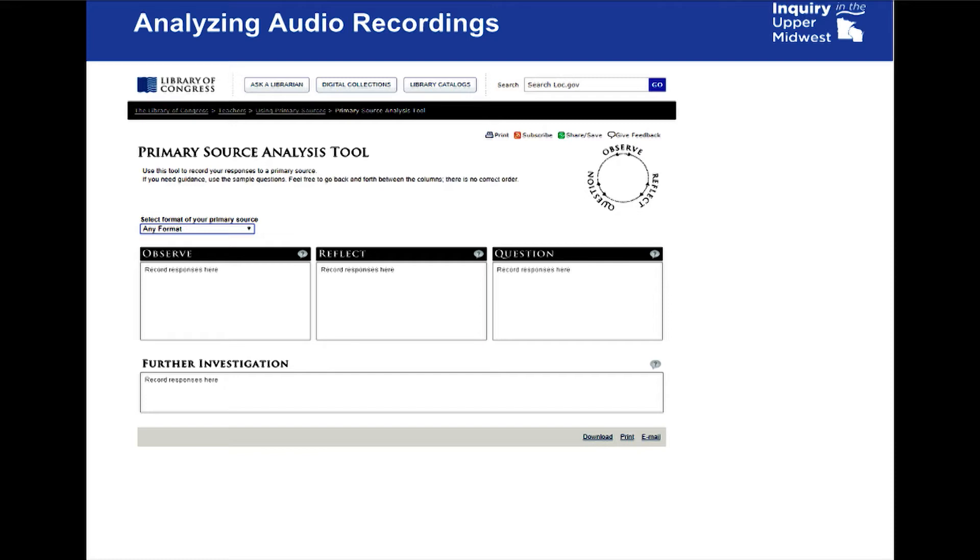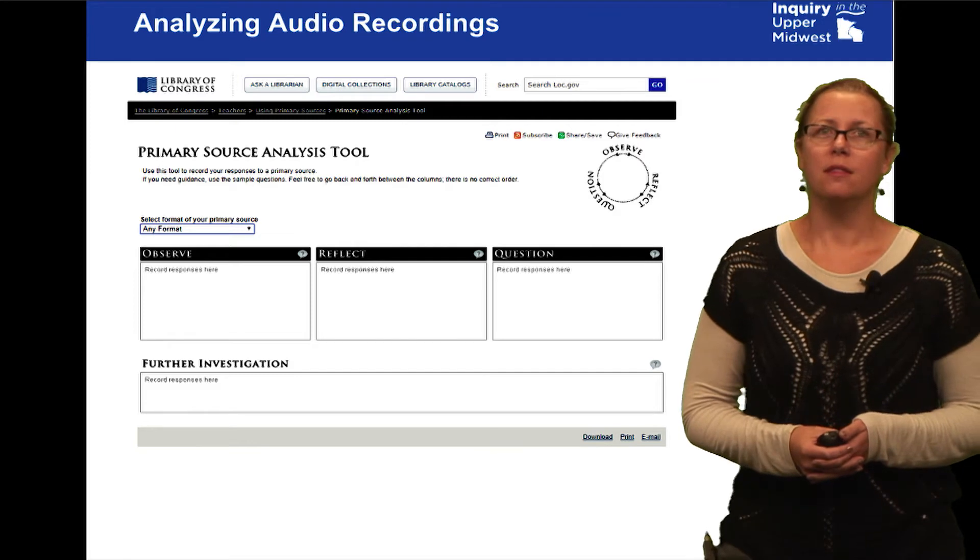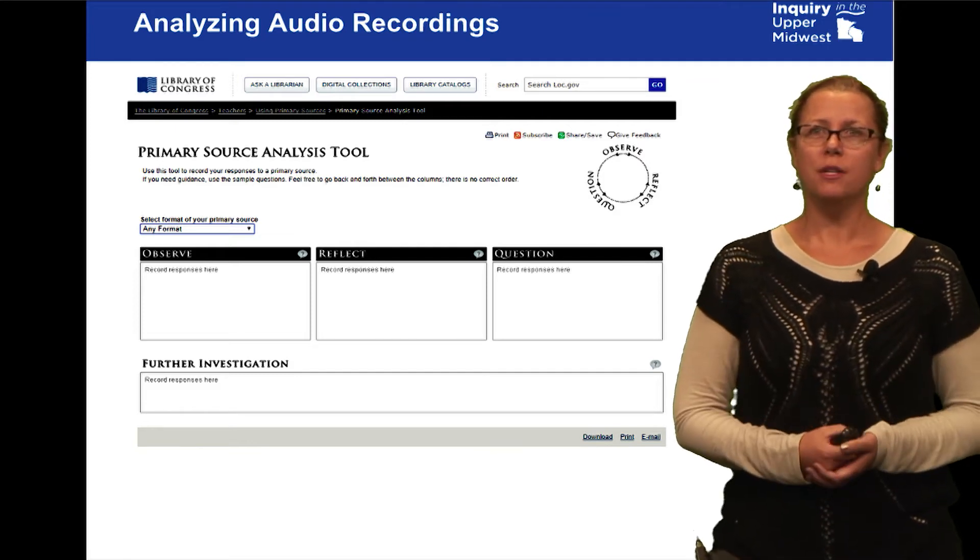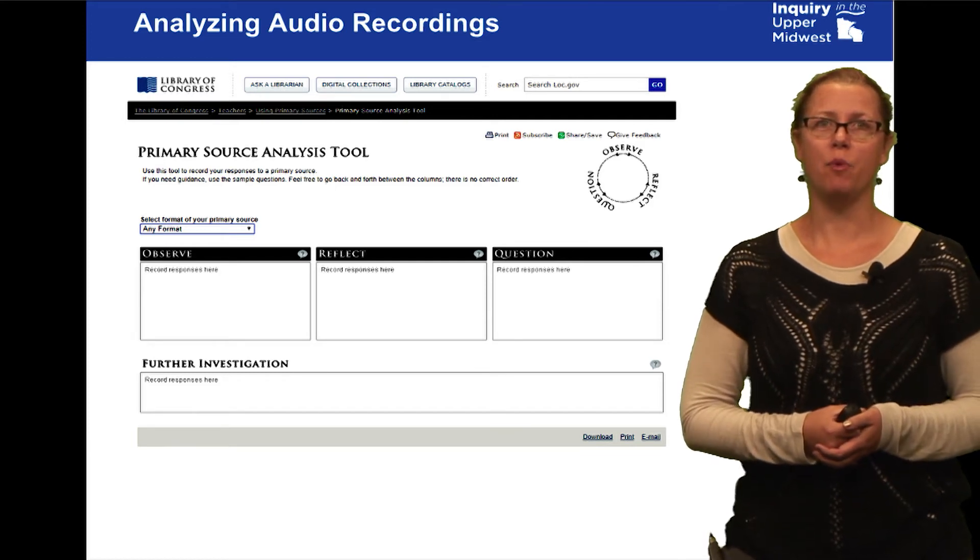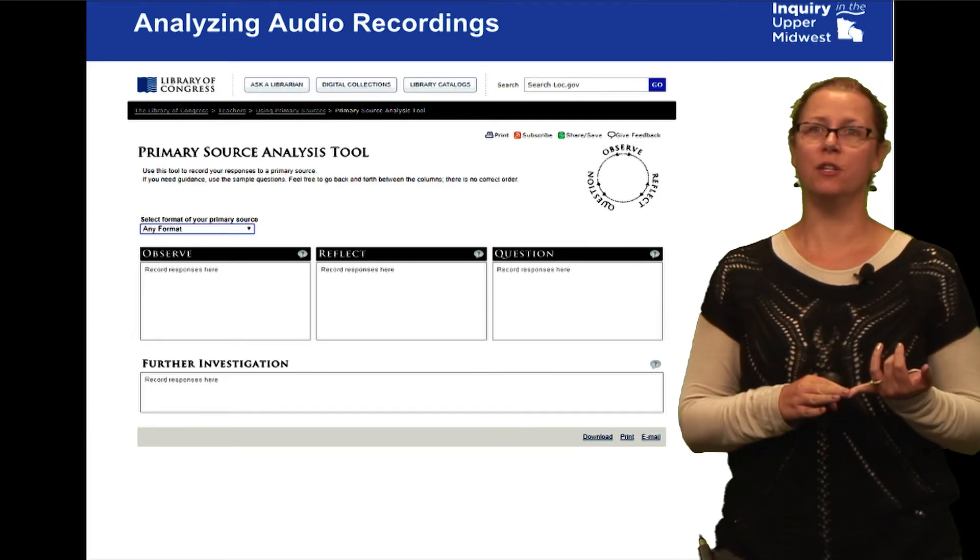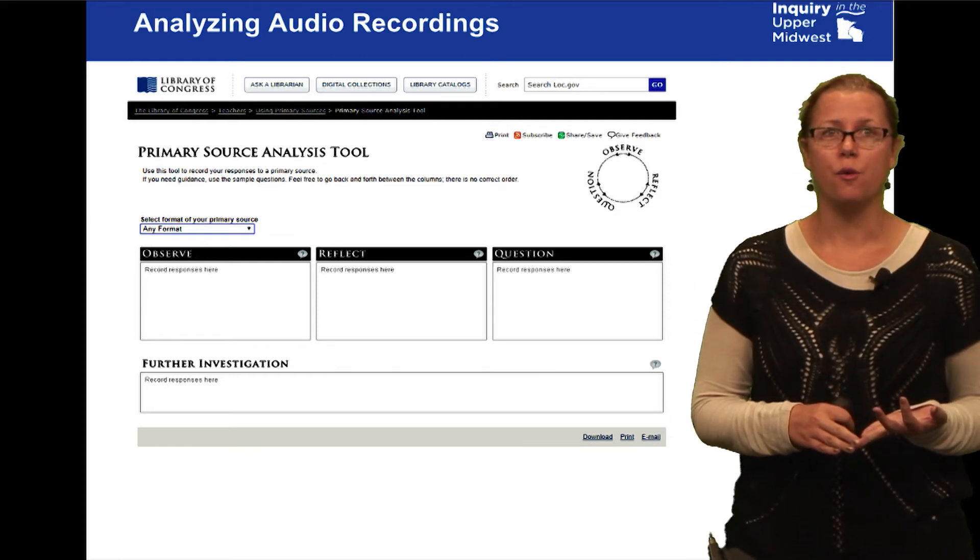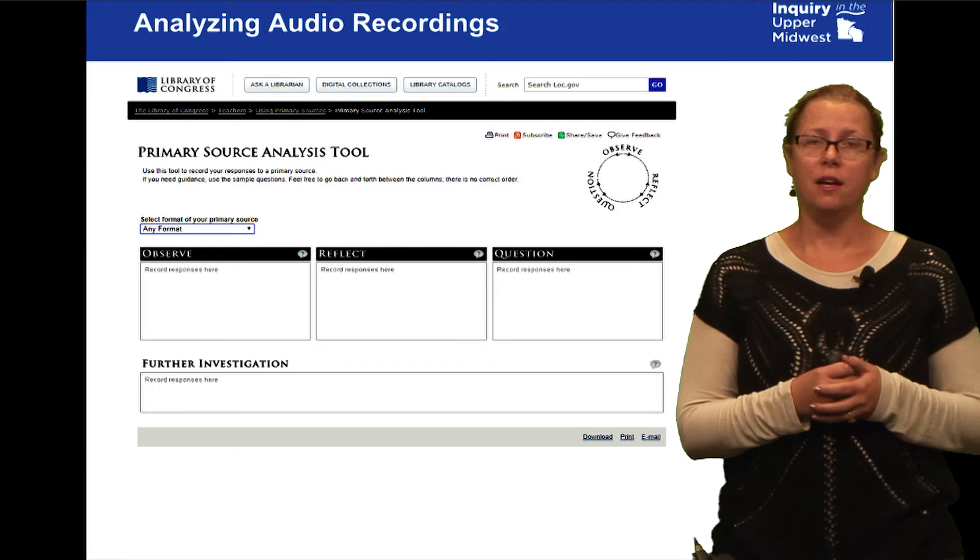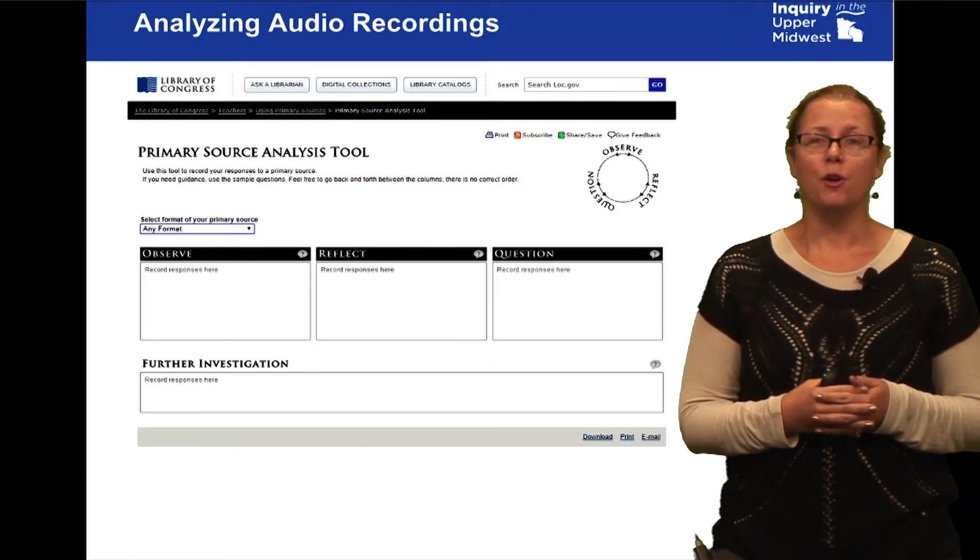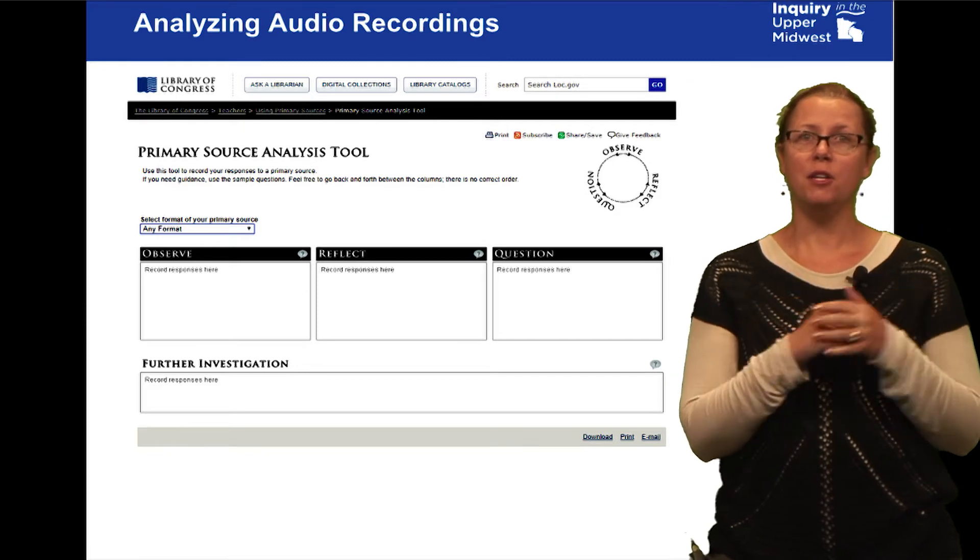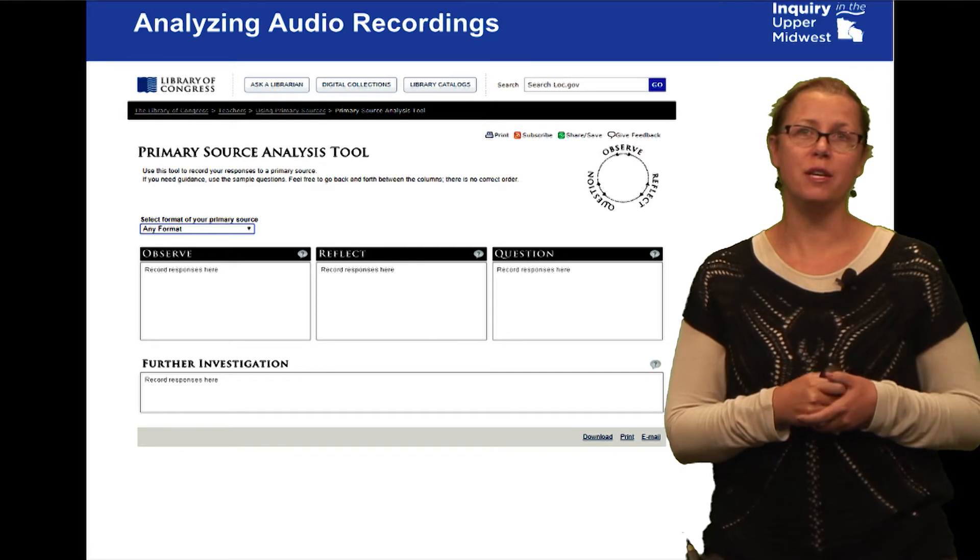We're going to be using this primary source analysis tool from the Library of Congress. These are downloadable tools that go along with different kinds of primary sources. They have a tool specific to sheet music and a separate one for audio recordings. You can go on to the website, type in your observations, reflections, and questions, and then download, print, or email it.